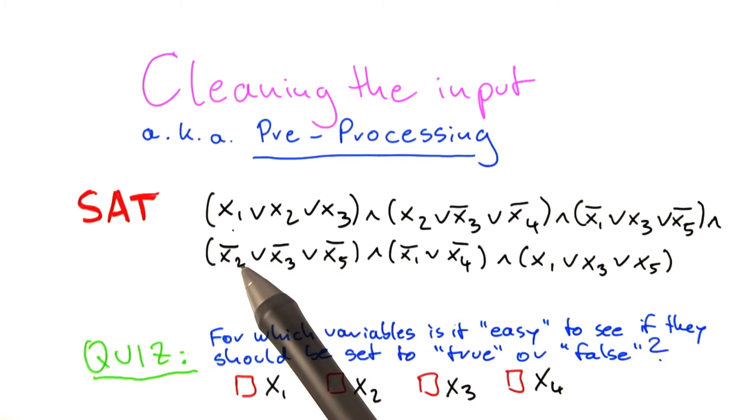And also the other preprocessing rule doesn't apply because each variable here appears more than once. So x1, for example, appears 4 times. It appears here, here, here, and here. And the same thing for all the other variables. So they all appear at least twice. So we can't use the rule that we just devised if a variable appears just once.